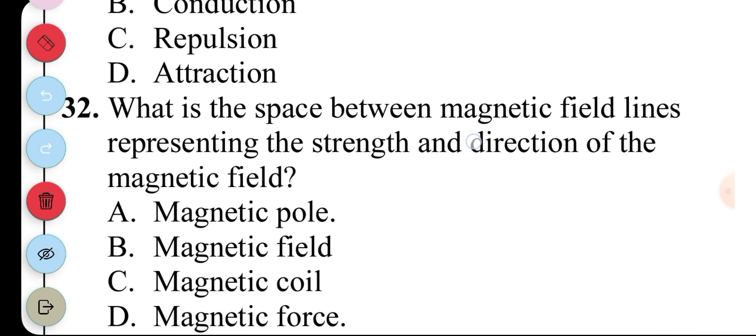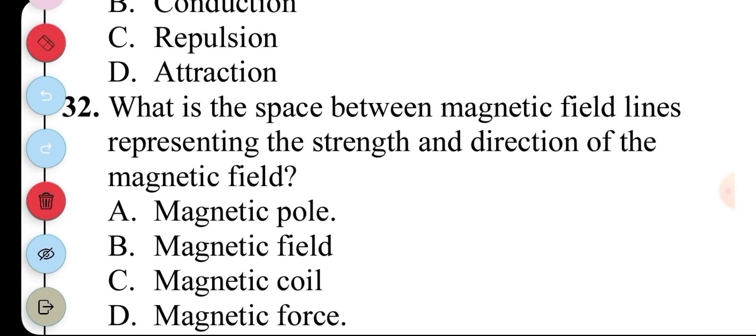Question 32. What is the space between magnetic field lines representing the strength and direction of the magnetic field? A. Magnetic pole, B. Magnetic field, C. Magnetic coil, D. Magnetic force. The answer to question 32 is B. Magnetic field.